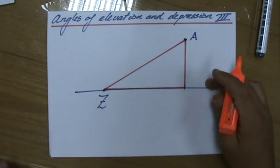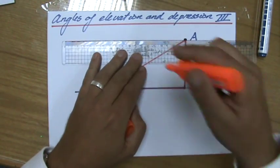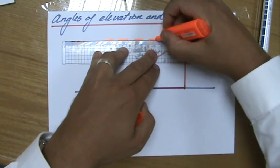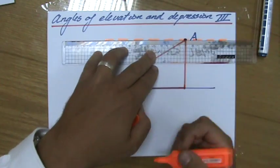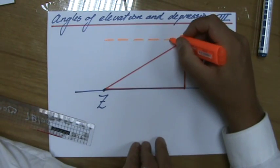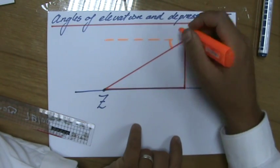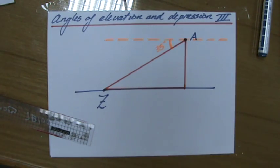Because an angle of depression is that angle below the horizontal. So if we're talking about the angle of depression of point Z from the airplane, I'm going to draw the horizontal here at the airplane. And then the angle of depression is this angle. That angle equals 35 degrees. That's the angle of depression.